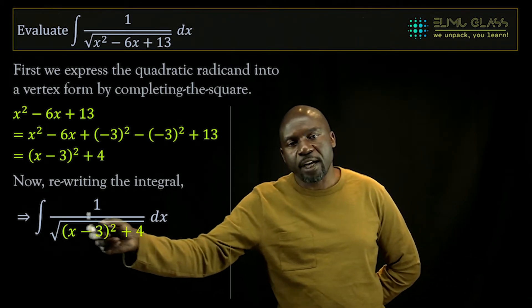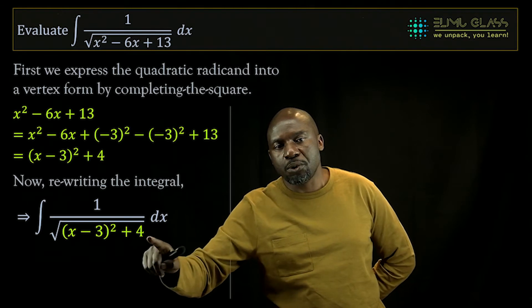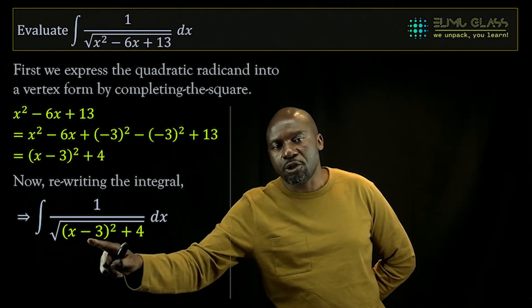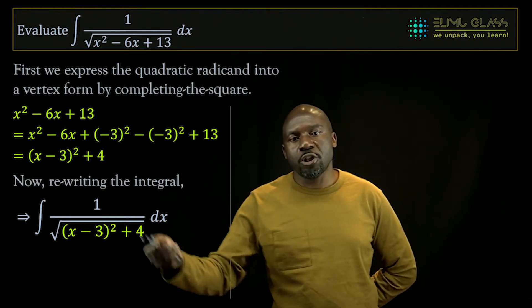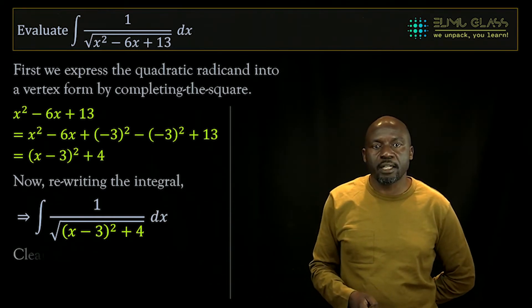I'm going to remove x minus 3 and substitute 2, because I'm seeing this, I'm going to square to get 4, so I'm going to substitute 2 tan theta. So I'm going to use the substitution, let x minus 3 be equal to 2 tan theta.